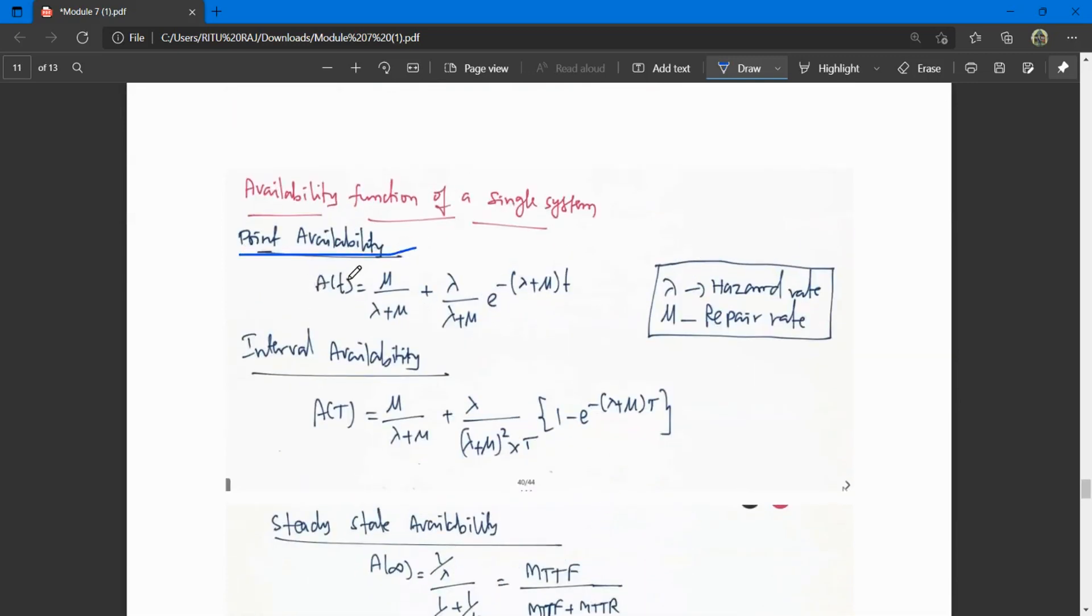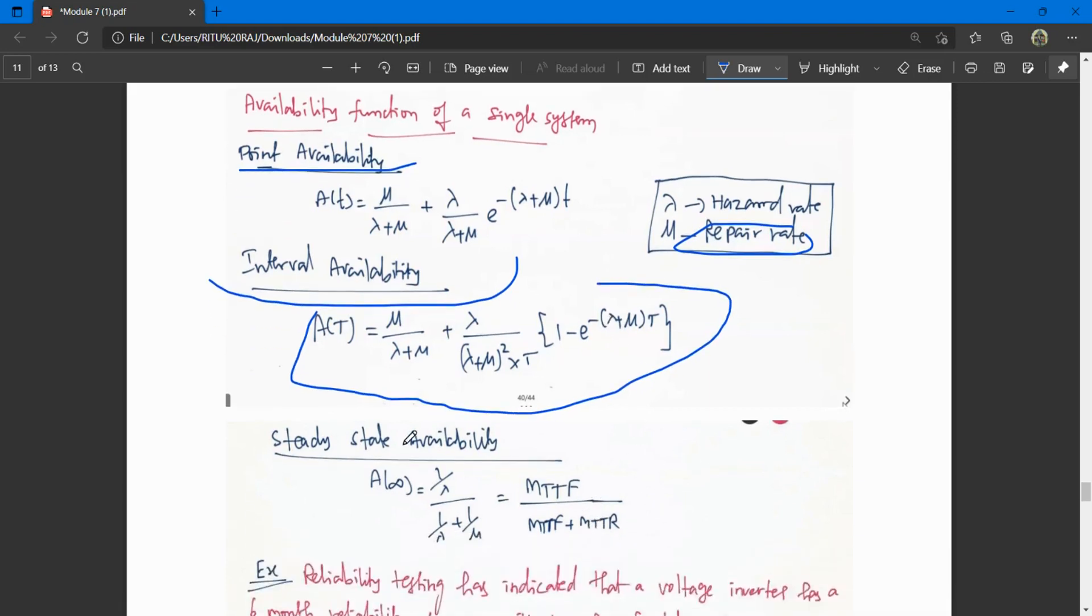Point availability is given by: nu/(lambda + nu) + lambda/((lambda + nu) × e to the power minus (lambda + nu)t). Here nu is the repair rate and lambda is the hazard rate. Interval availability is given by this formula. You just need to remember the formulas or write them in your notebook for reference in online exams.